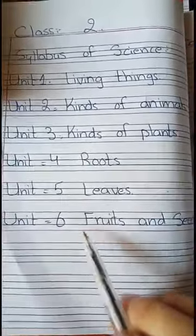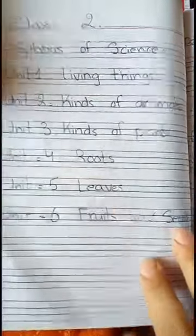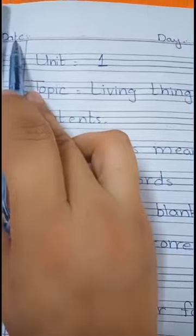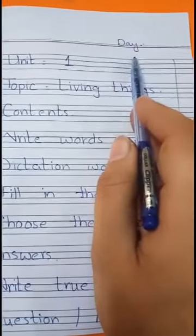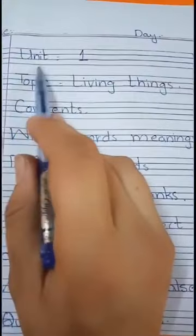Unit 6: Fruits and Seeds. Dear students, first write date and day, draw margin lines on both sides, then write.